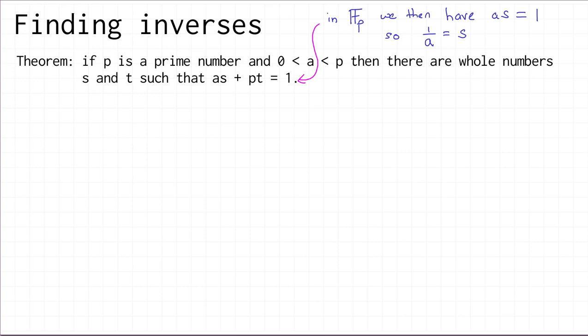I'm not going to give a full proof of this result — you can read that in the notes. Instead, I'll give a special case that contains all the complexity of the main proof but is simpler to write down. We do repeated division with remainder. We start by dividing p by a, writing p as quotient number 2 times a plus remainder number 2, where r2 is strictly less than a.